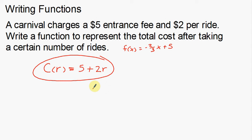You really need to understand the problem before you can start writing functions, and you need to decide what variables to use and what to call the function. In this case, I'm representing the total cost — so C for total cost — and rides is my variable since I can have 10, 20, or 50 rides. My cost is based on my rides: $5 to get in plus $2 per ride. That is writing functions. I hope you enjoyed this video and I hope it helped. Thank you.